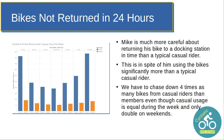It has to do with bikes we have to chase down. What this tells us is that our annual pass holders are much more careful about returning bikes to a docking station than typical casual riders. This is in spite of members using the bikes significantly more. We have to chase down four times as many bikes from casual riders than annual pass holders, even though casual usage is equal during the week and only double on the weekends.